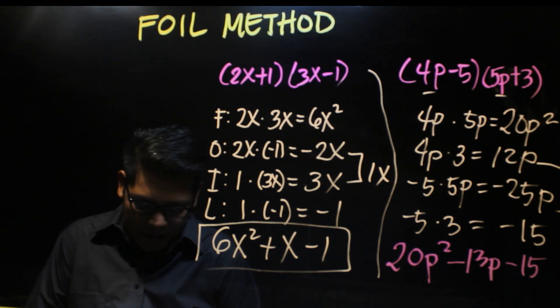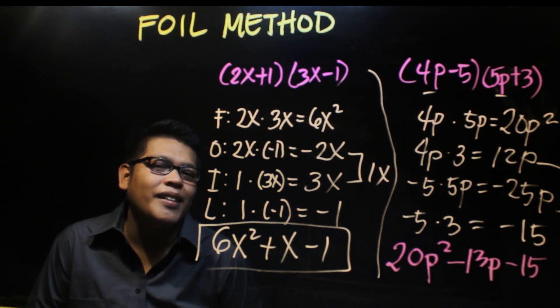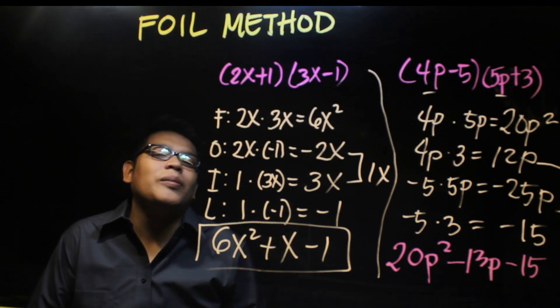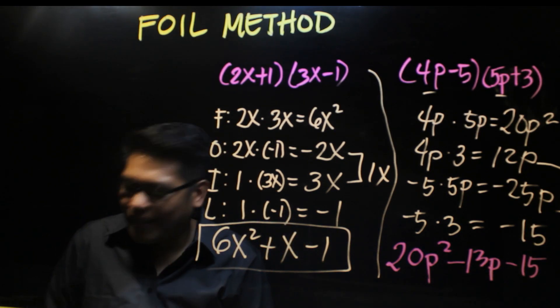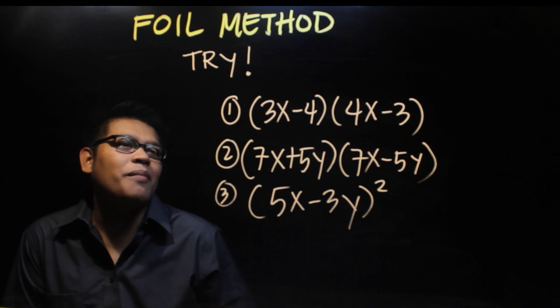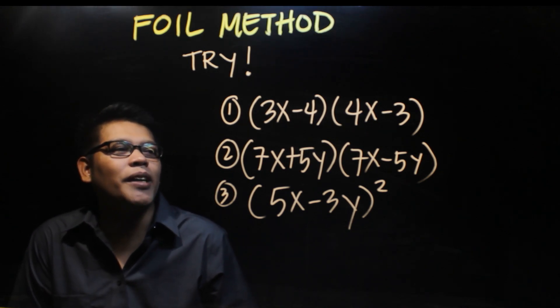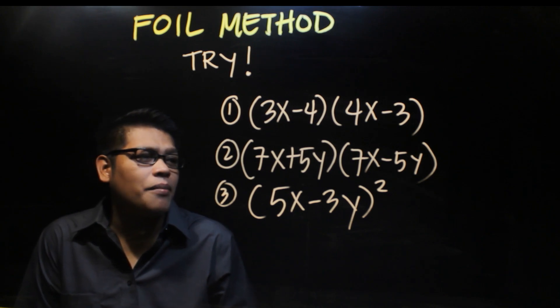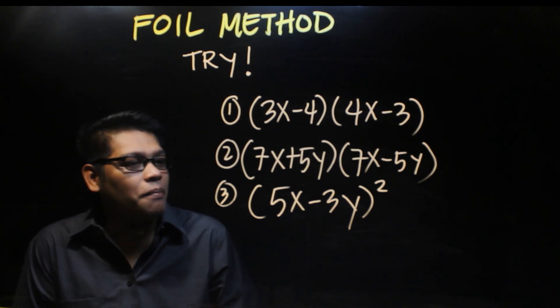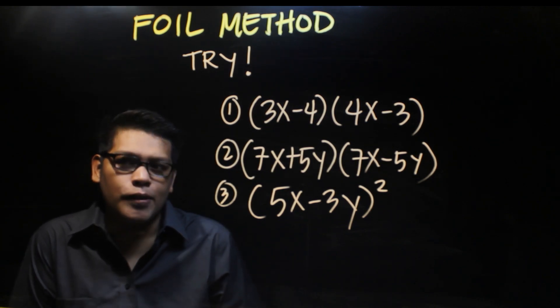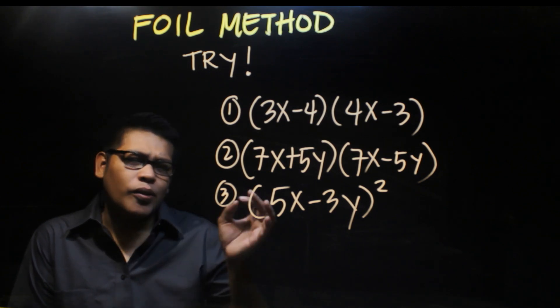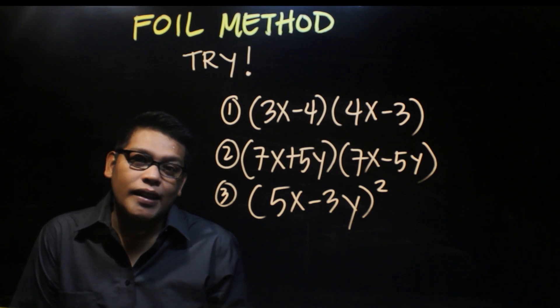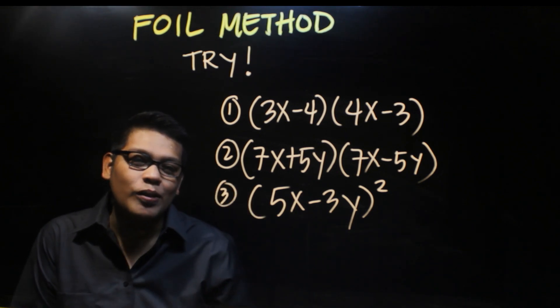Do you understand the foil method? It's quite easy. Now let's see if you can get the next examples. Try number 1: (3x-4) times (4x-3). Number 2: (7x+5y) times (7x-5y). And (5x-3y) squared. Solve these and comment your answer below. I'll check if your answers and solutions are correct.